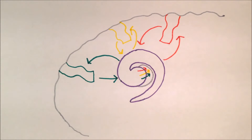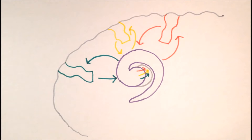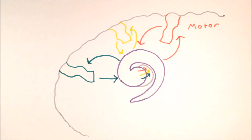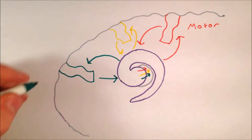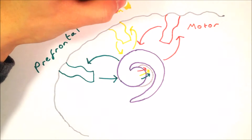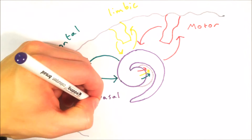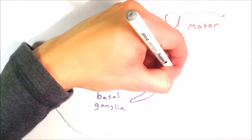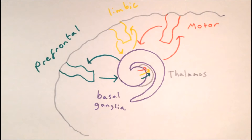Loops originating from different areas of the cortex serve different functions. As well as motor loops from the motor cortices, we also have loops which deal with what are known as executive functions — how we make decisions — which originate in the prefrontal cortex, and affective or emotional loops which originate in the limbic areas of the cortex.